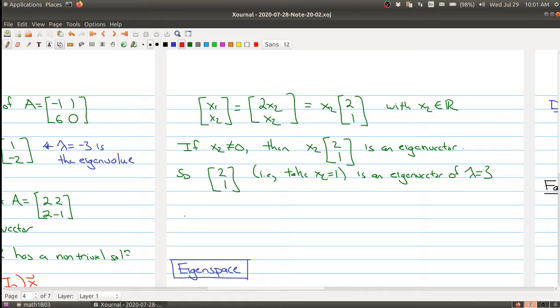Also I want to point out that you actually have enough information to check your answer because we're claiming that [2; 1] is an eigenvector corresponding to 3.